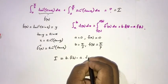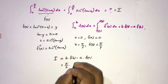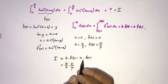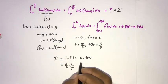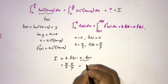Now we can write I is equal to b times f(b) minus a times f(a). So b is equal to π/2, f(b) is equal to π/4, and here a is equal to 0, so this part will be 0.